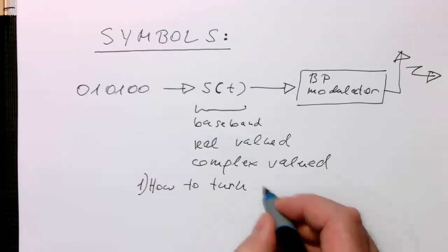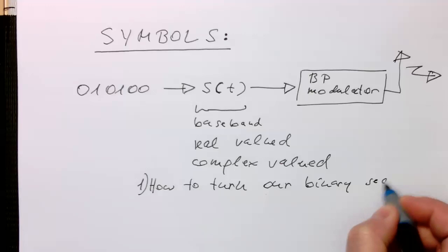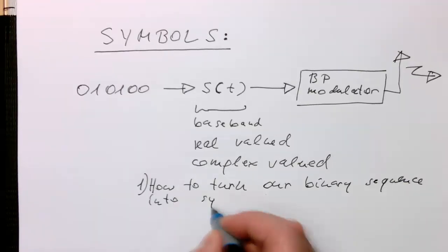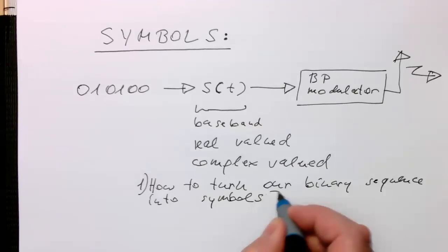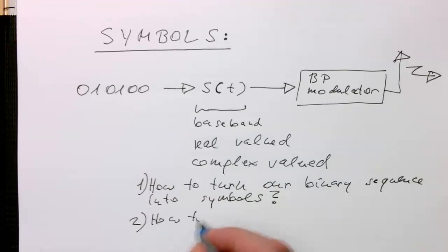How to turn our binary sequence into symbols, and then when we are doing that, the other problem is how do we control the bandwidth of the signal here, so how to limit the bandwidth of s(t).